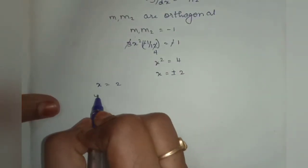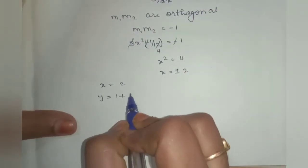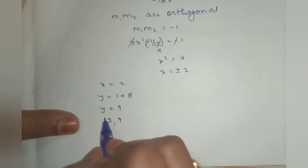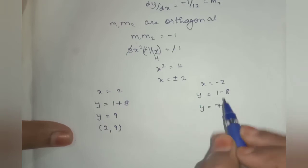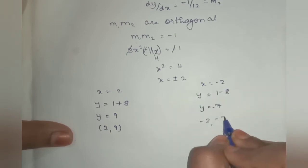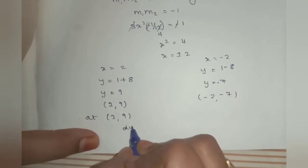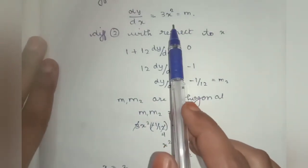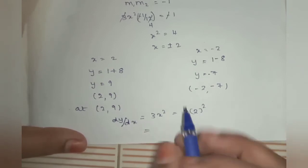For x = minus 2: y = 1 + (minus 2)³ = 1 minus 8 = minus 7. For x = plus 2: y = 1 + 2³ = 9. Substituting into dy/dx = 3x²: at x = 2, dy/dx = 3 times 4 = 12.